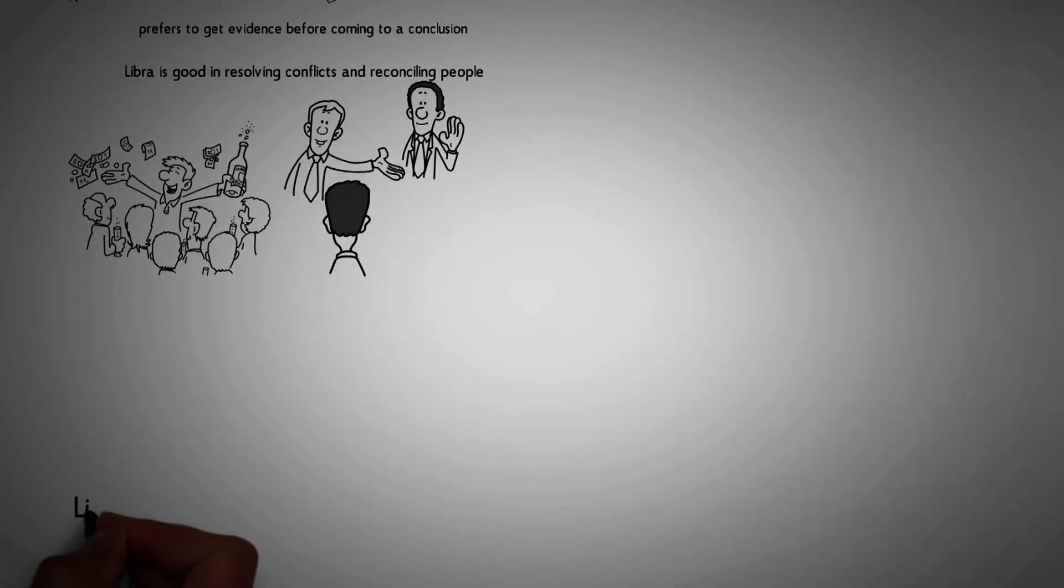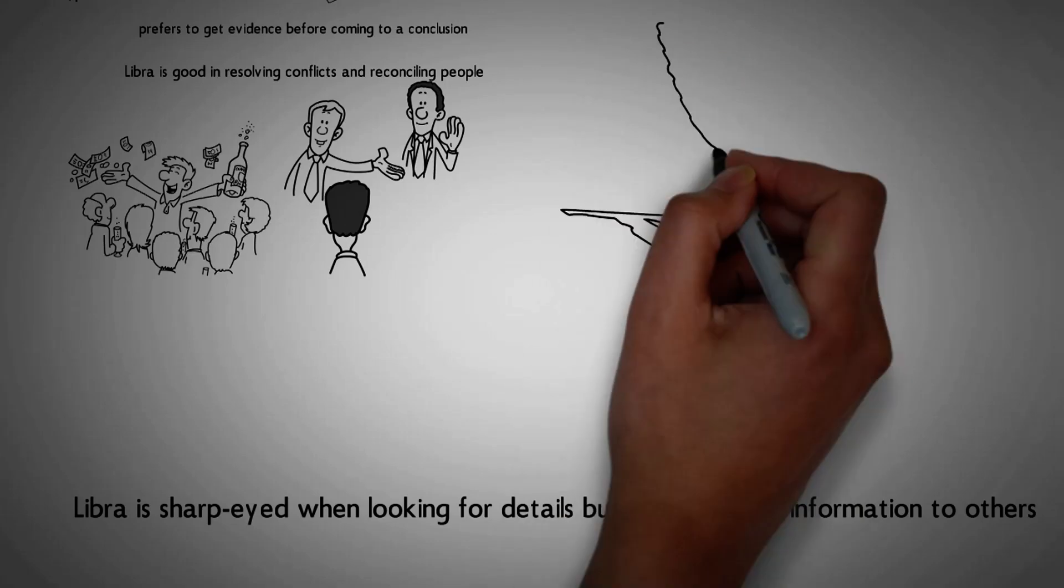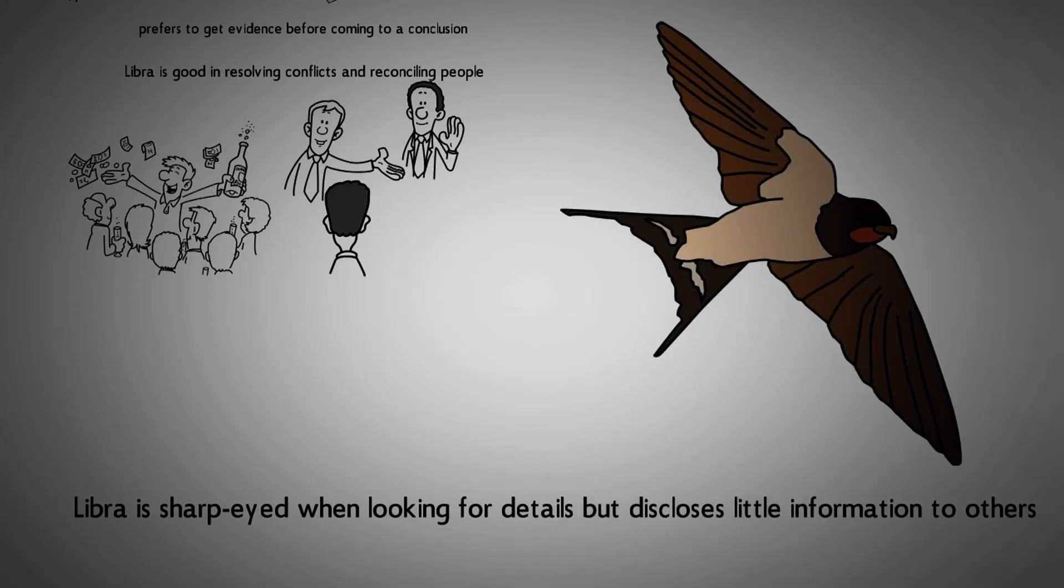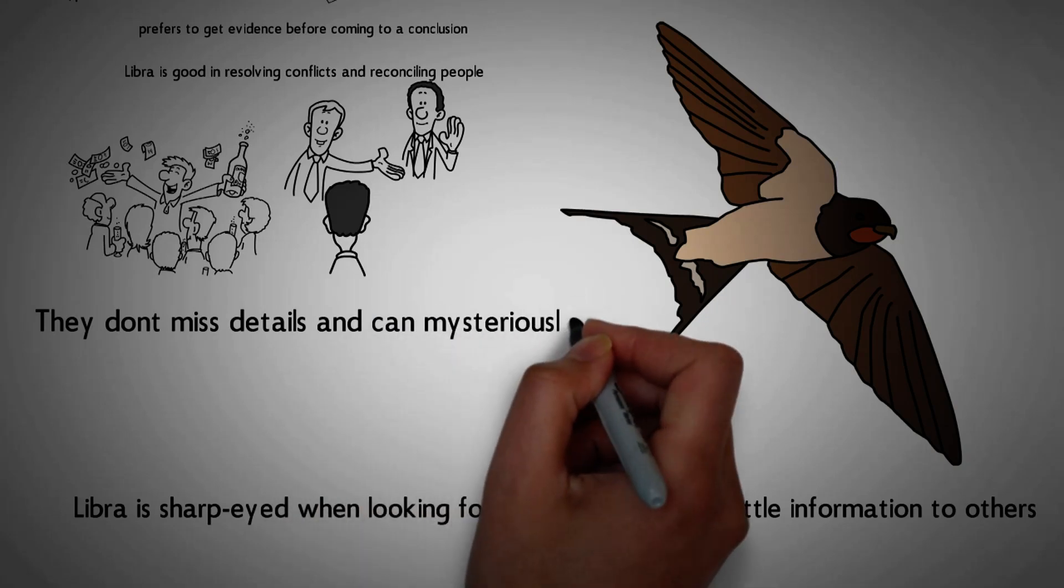Number 7. Libra is sharp-eyed when looking for details but discloses little information to others. Libra has hawk eyes and consciously records things that they see at the back of their mind. They don't miss details and can mysteriously tell when things are wrong.